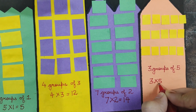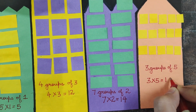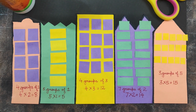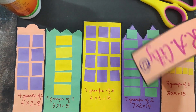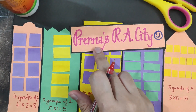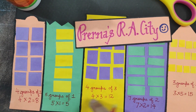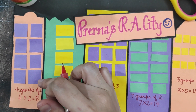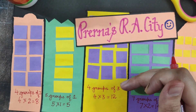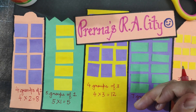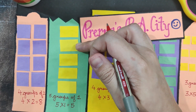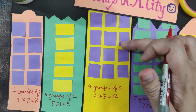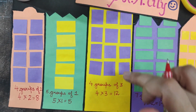The last one is three groups of five, which means three times five, which is equal to fifteen windows. This is repeated addition: one plus one plus one plus one plus one is repeated addition. Again, three plus three plus three plus three means four groups of three.